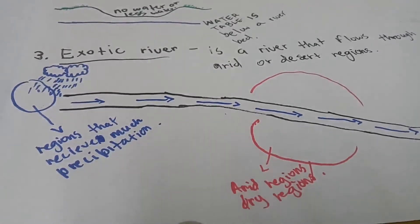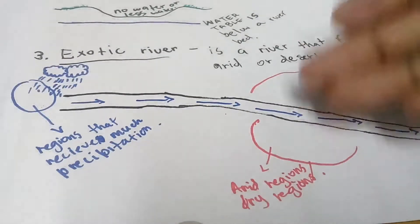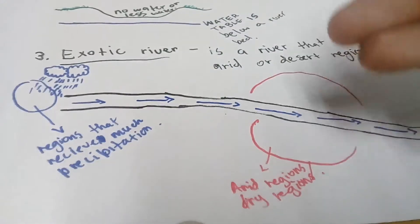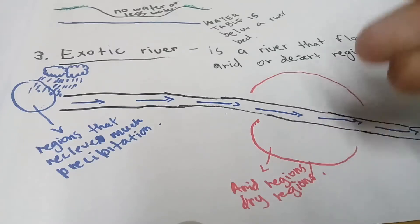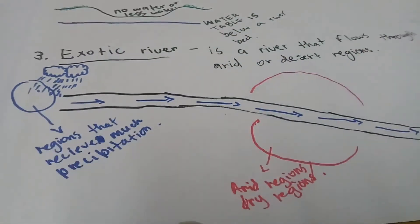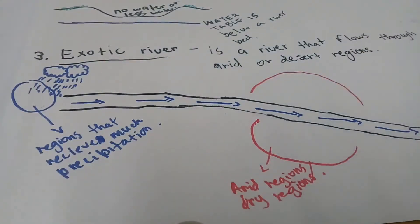Thank you so much guys. This is the last river we have discussed — the exotic river. People who are living in desert or arid regions, who have no form of precipitation, are going to receive some water from this exotic river that originates from regions receiving much precipitation. I hope you've learned a lot from my lesson — see you next time, thank you so much.